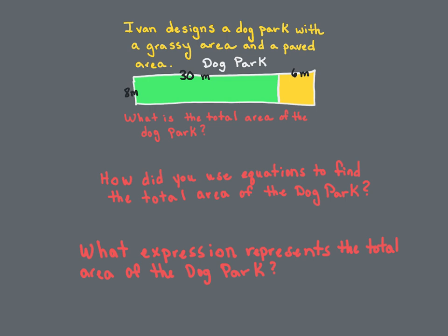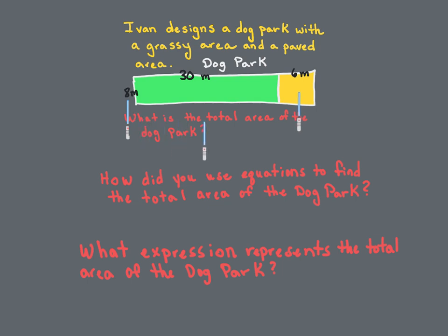Ivan designed a dog park with a grassy area and a paved area. Here's his dog park — a rectangular shape. This side is 8 meters. Up here it's split up: here's the grassy area at 30 meters, and 6 meters of just pavement. What is the total area of the dog park?